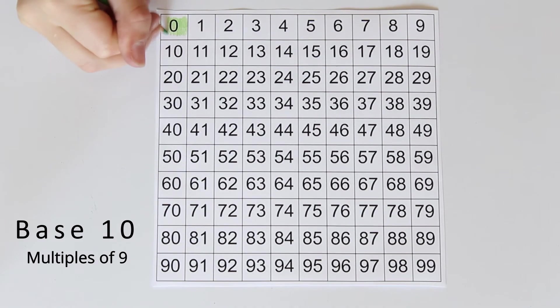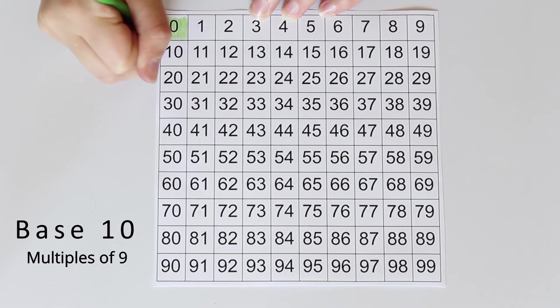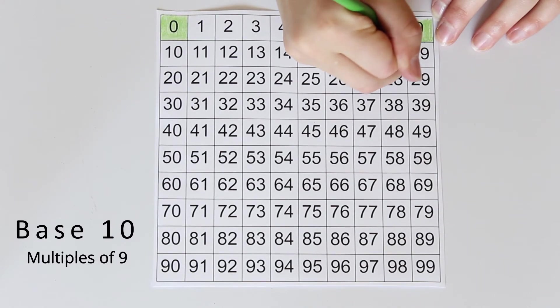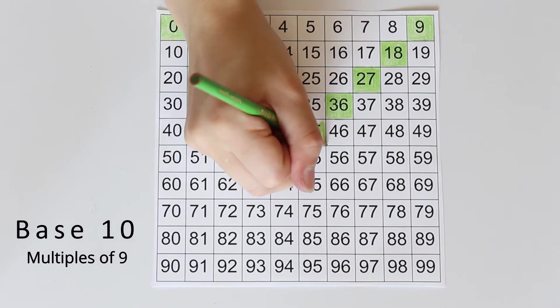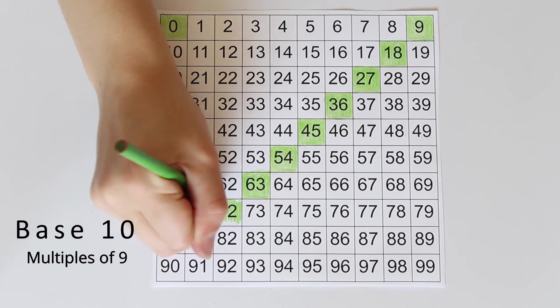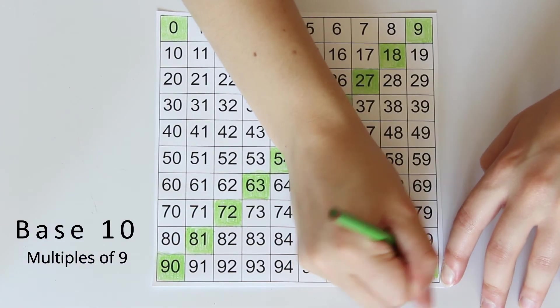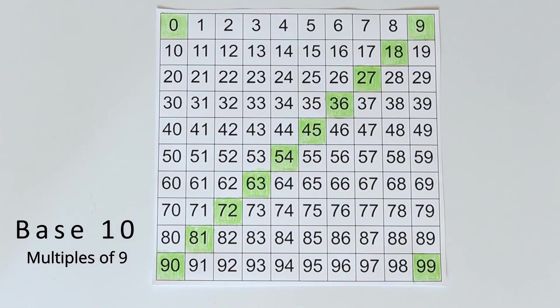Here I have a counting table, just like you might have used in primary school. And we will color in 0, 9, 18, 27, 36, 45, 54, 63, 72, 81, 90, and 99. The same pattern occurs again!